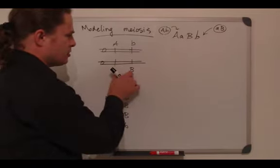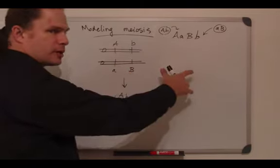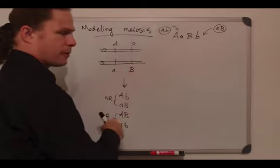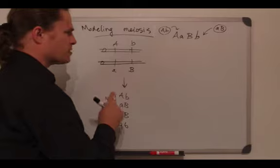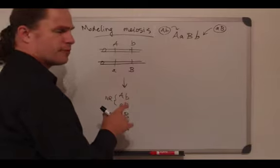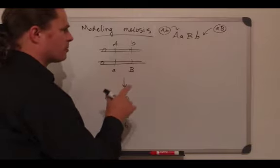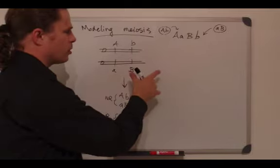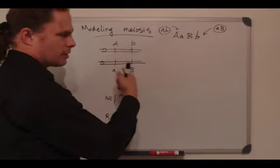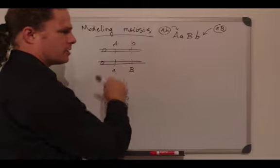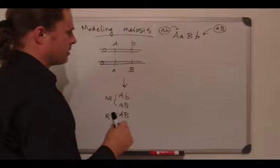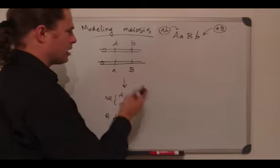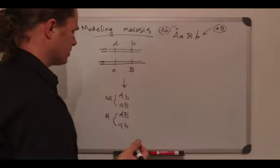If these two loci are very far apart on the same chromosome, they will have a recombination frequency of 50 percent. So if you see a recombination frequency of 50 percent, it's formally possible that it could be two loci far apart on the same chromosome, or more likely that they are independently assorting on separate chromosomes. Other data in the question may help you sort out between those two possibilities.